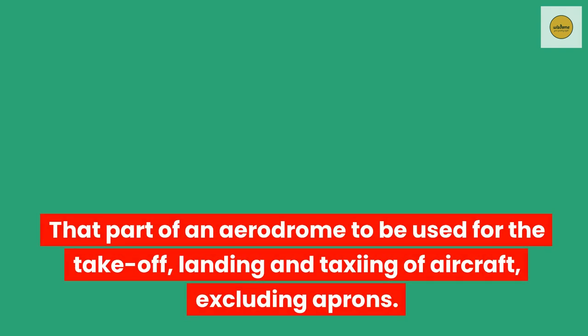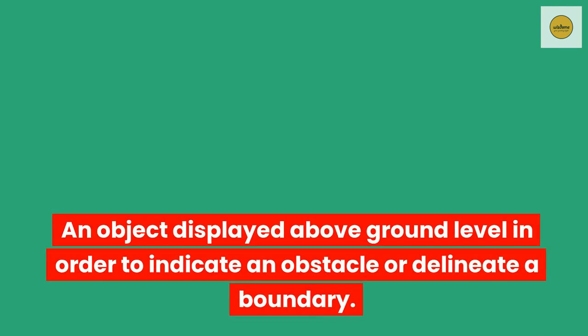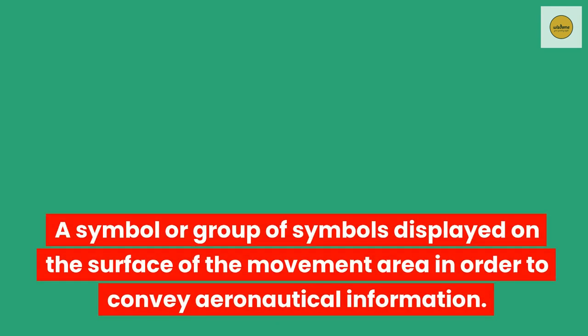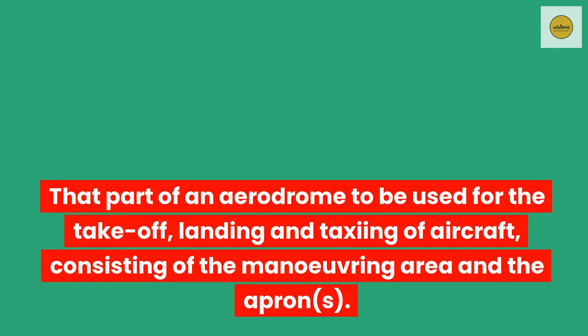Maneuvering area. That part of an aerodrome to be used for the takeoff, landing and taxiing of aircraft, excluding aprons. Marker. An object displayed above ground level in order to indicate an obstacle or delineate a boundary. Marking. A symbol or group of symbols displayed on the surface of the movement area in order to convey aeronautical information. Movement area. That part of an aerodrome to be used for the takeoff, landing and taxiing of aircraft, consisting of the maneuvering area and the aprons.